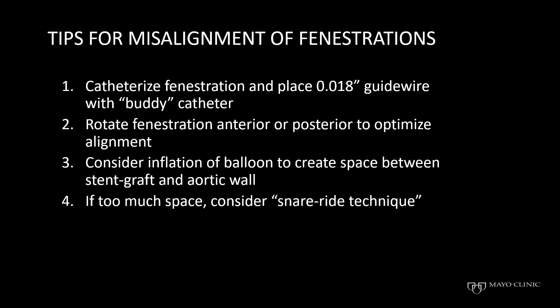The maneuvers I routinely use in patients with malalignment include first focusing only on catheterization of the fenestration to secure access by placement of a 0.018 body wire. You can also rotate the fenestration anteriorly, given that most fenestrations are displaced somewhat posteriorly because of the diameter-reducing ties. If you have no space, you can create space by inflating a balloon between the fabric of the stent graft and the aortic wall. Or, less frequently, when there is too much space, you may consider using the snare-ride technique described by Marcelo Ferreira.